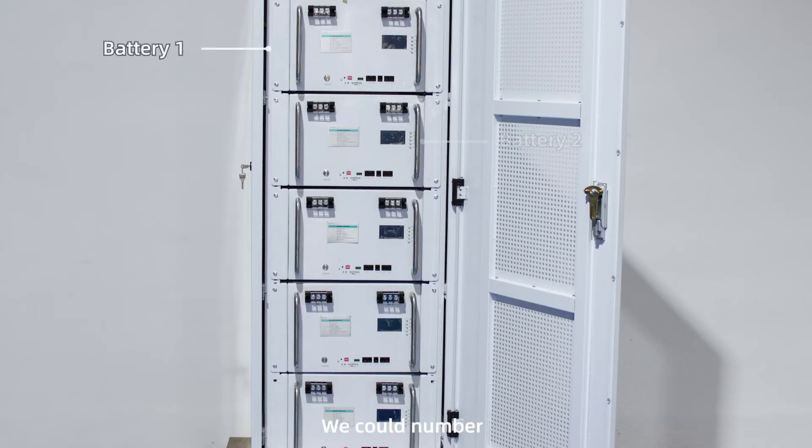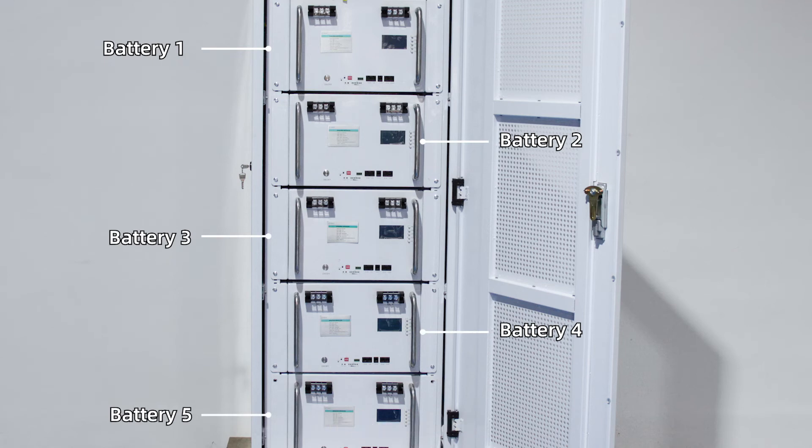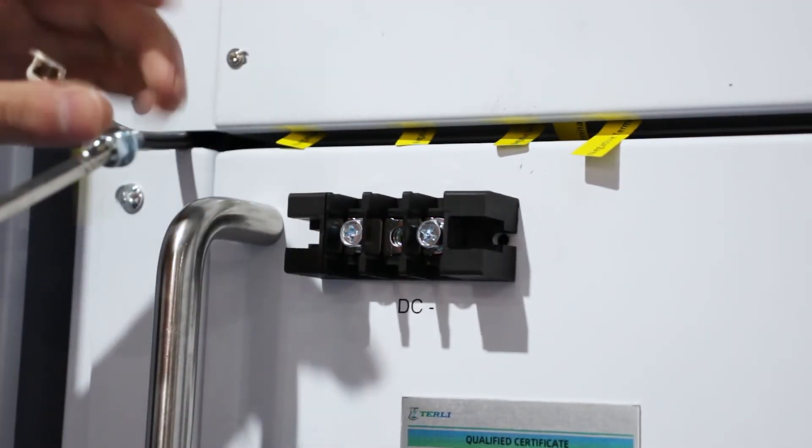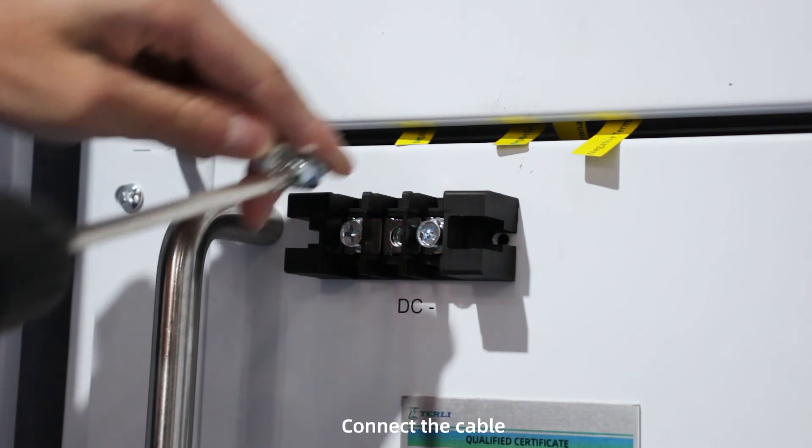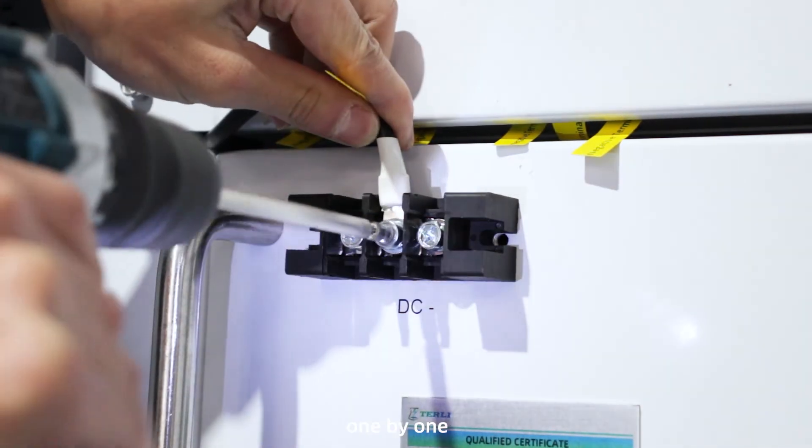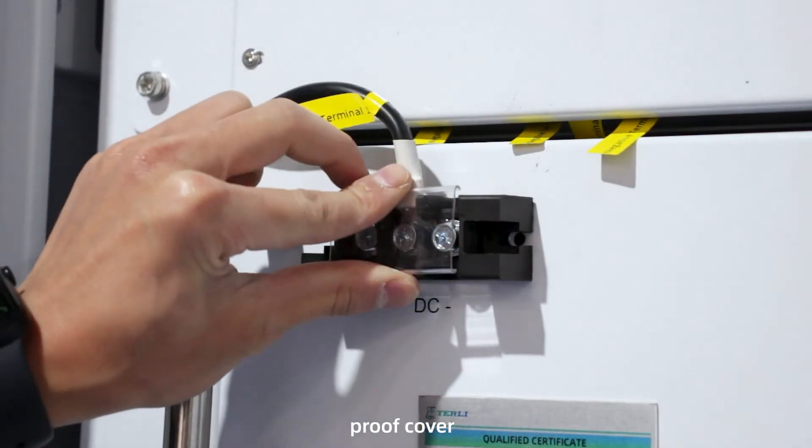We number the modules like this, connect the cables with the ports one by one, and put on the dust proof covers.